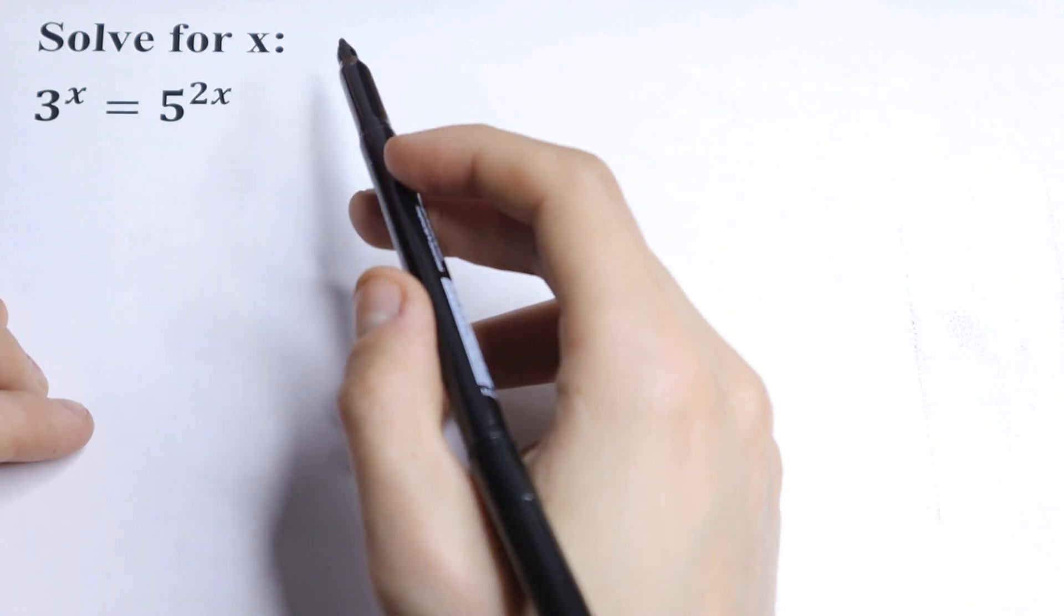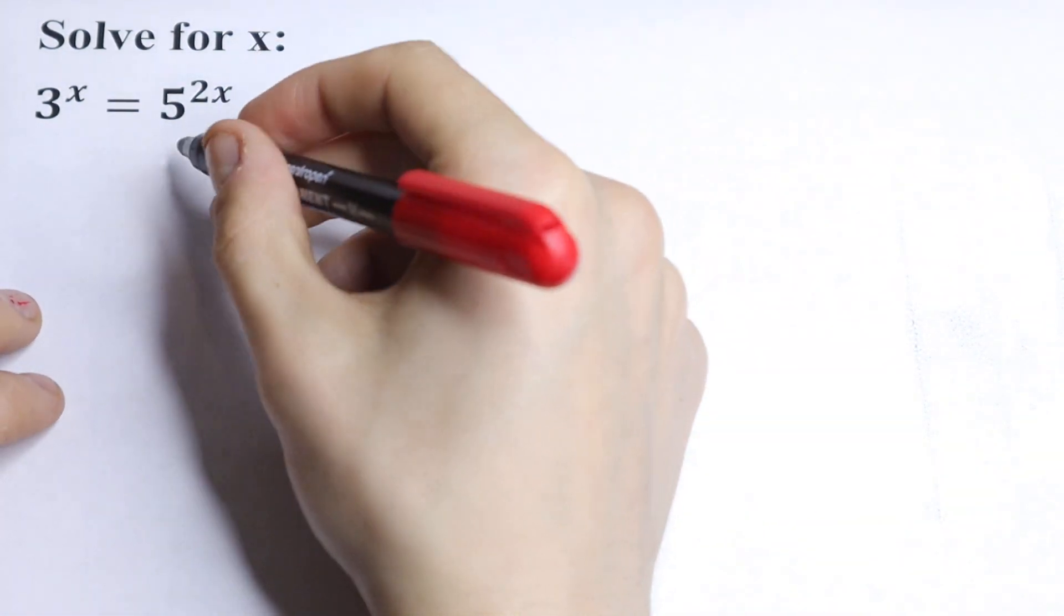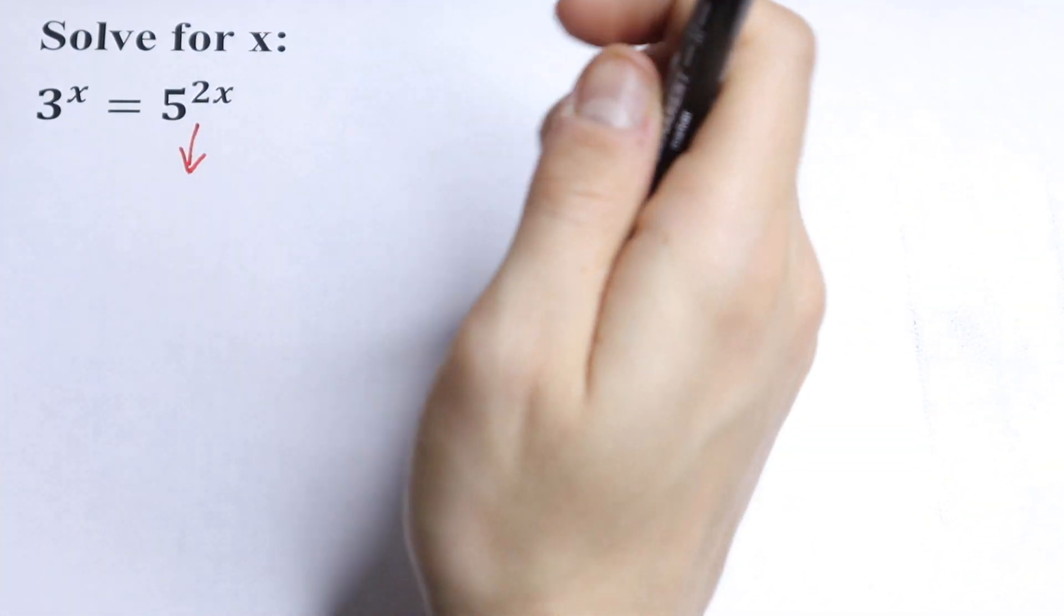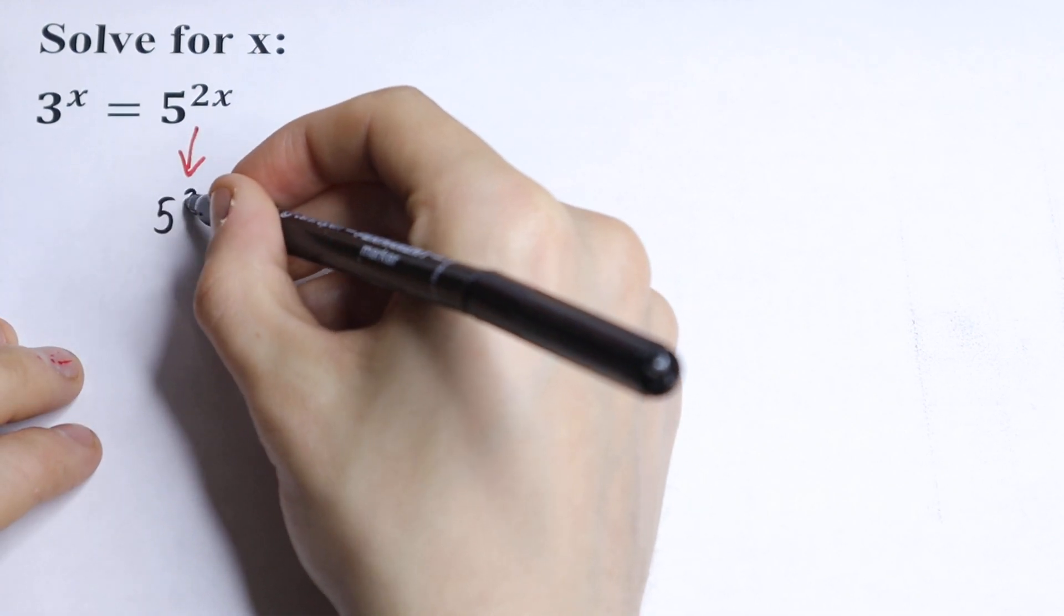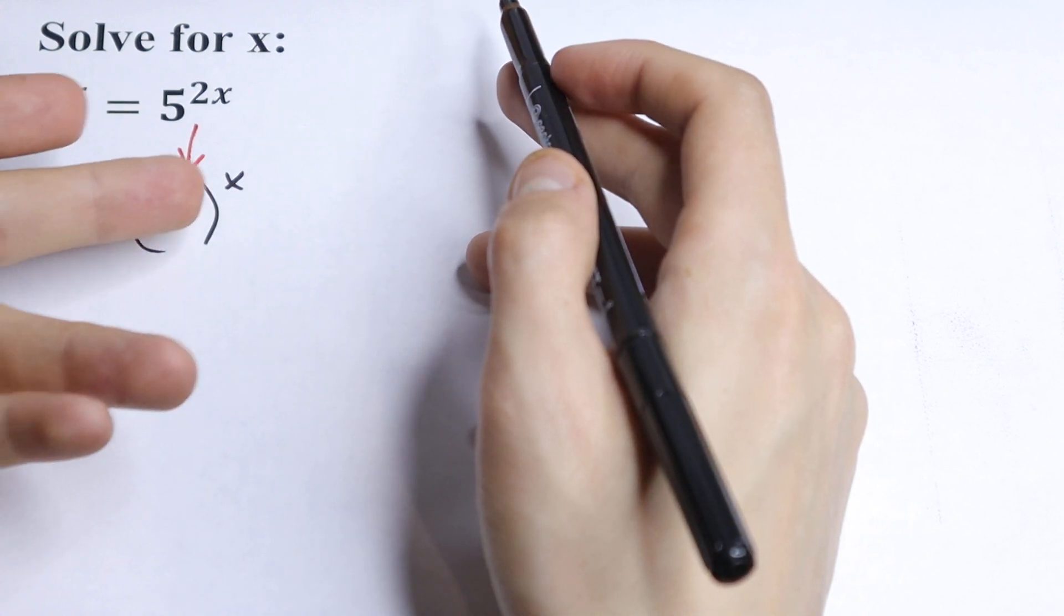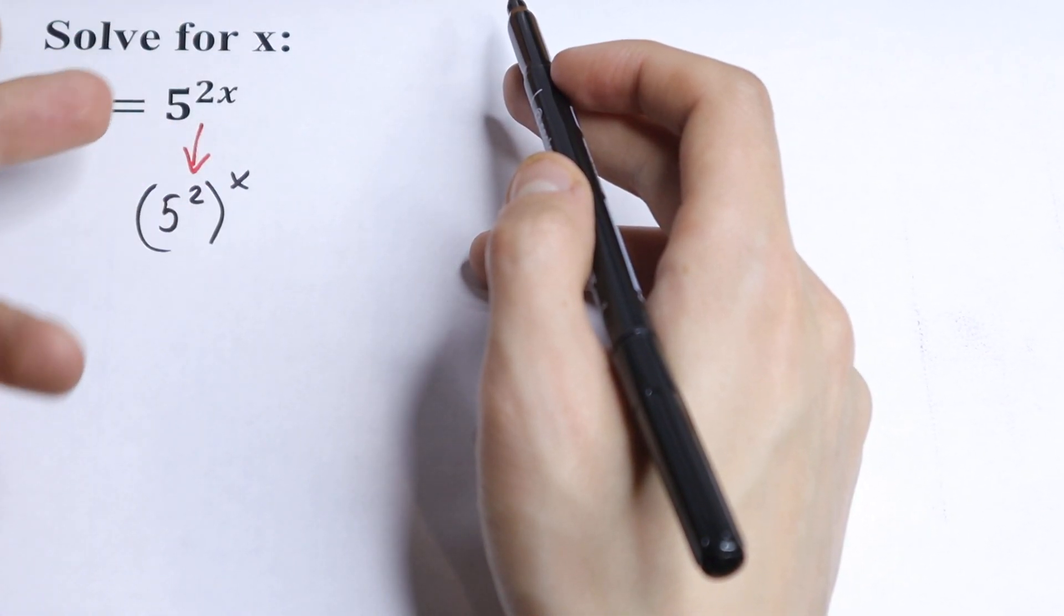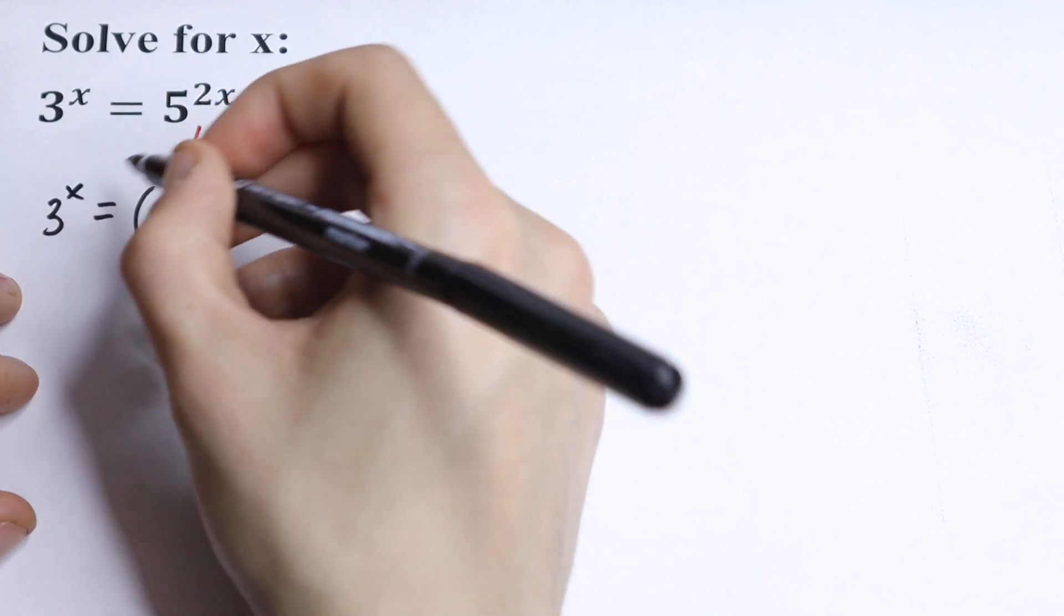Of course we can simplify our right side because we know that if we have 5 to the power 2x, we can write this as 5 squared raised to the power x. Then we multiply and we have our 5 to the power 2x in the beginning, so this equals 3 to the power x.